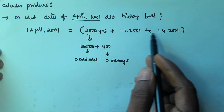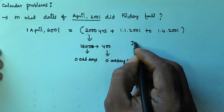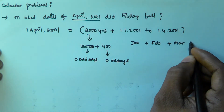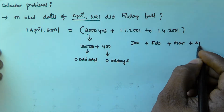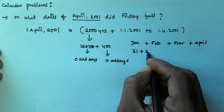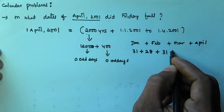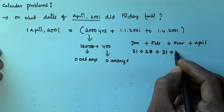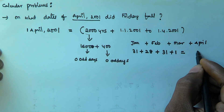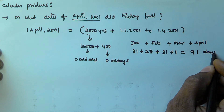From 1st January to 1st April, we count: January has 31 days, February has 28 days — because 2001 is a normal year — and March has 31 days. We take 1 day from April for April 1st. So that is 31 + 28 + 31 + 1 = 91 days.